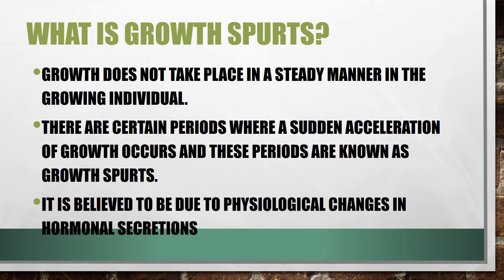For example, at puberty, secondary sexual characteristics appear due to secretion of hormones — testosterone in males and estrogen in females. This is an example of why growth spurts occur: a sudden increase in hormonal secretion causes sudden growth. These are your growth spurts.